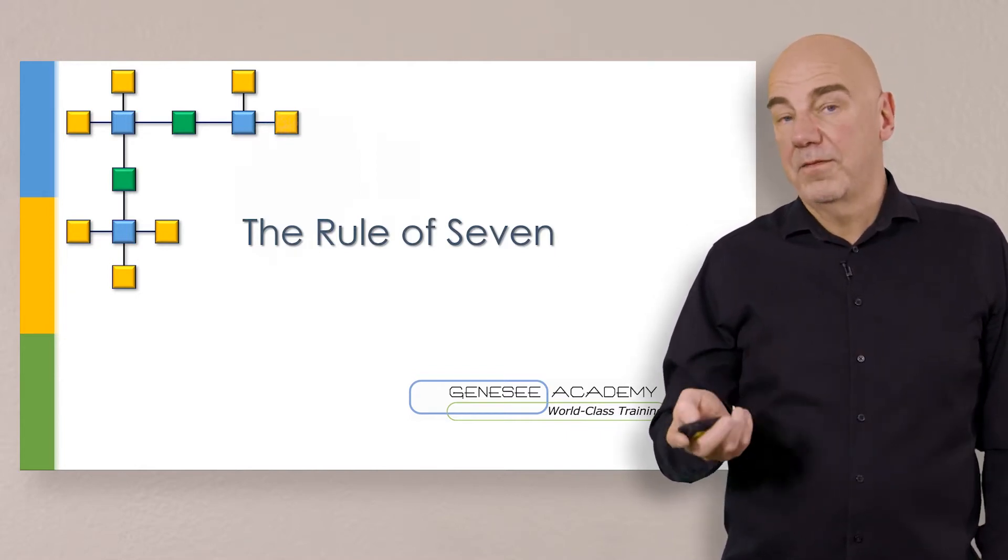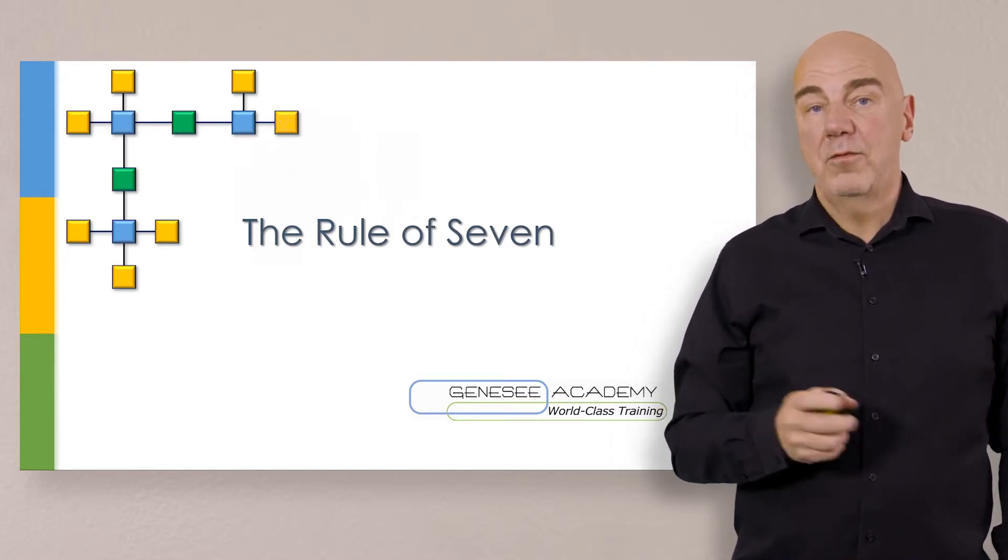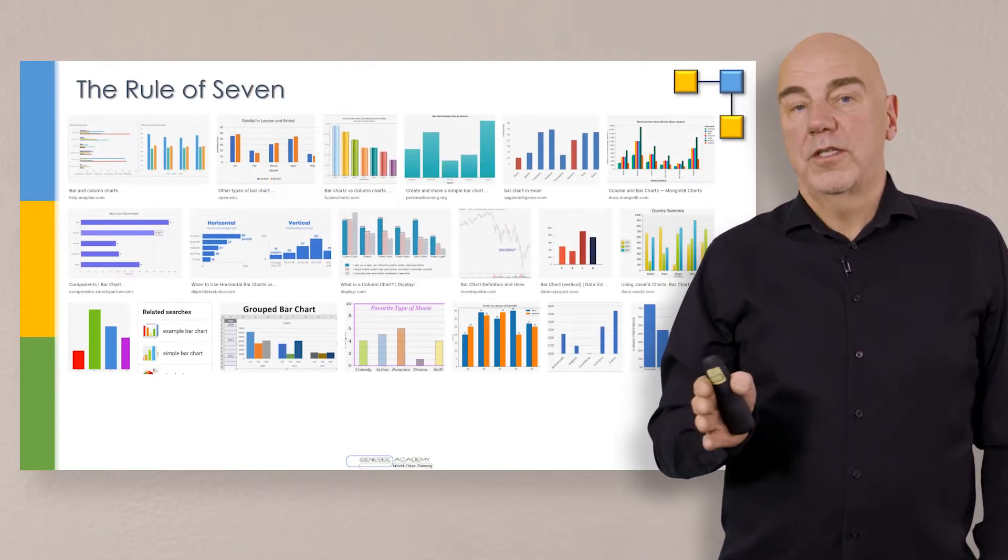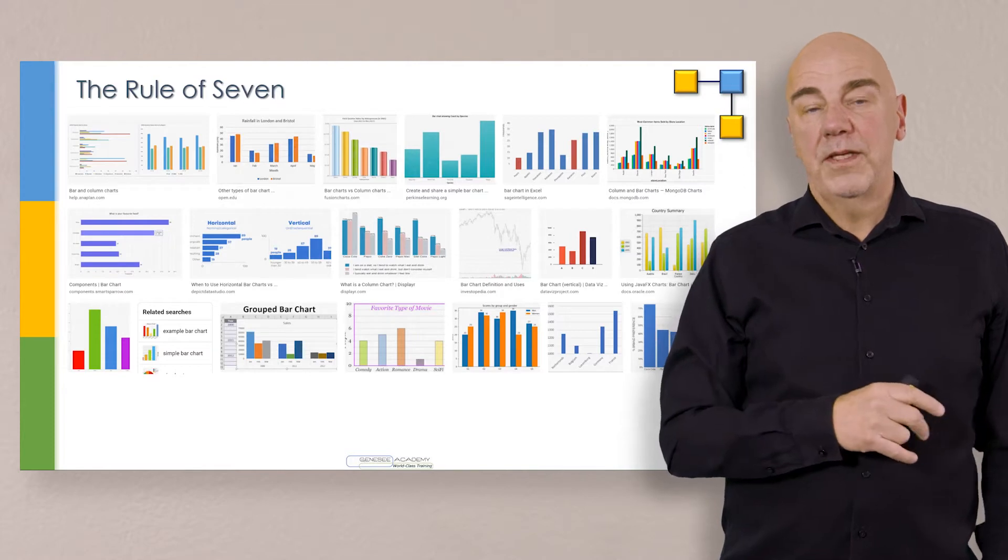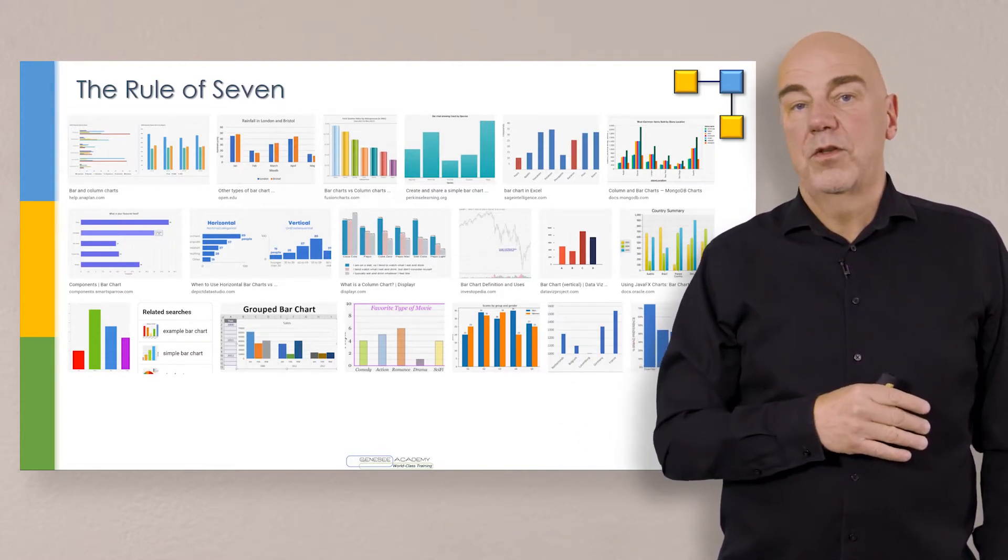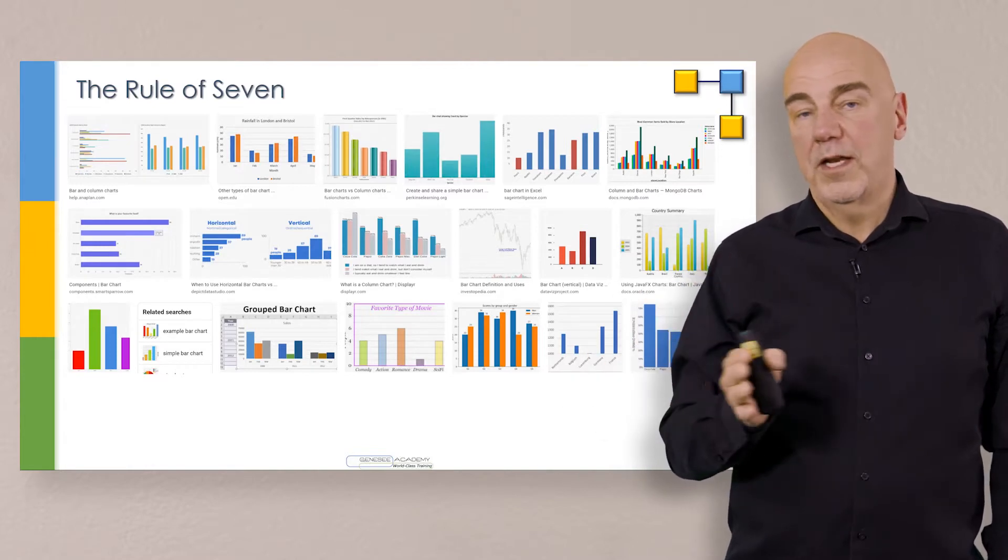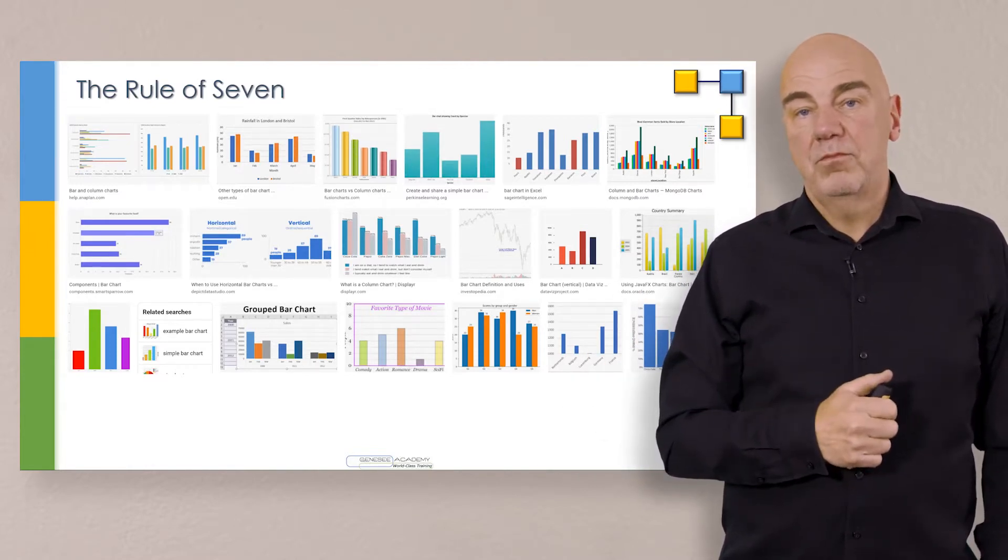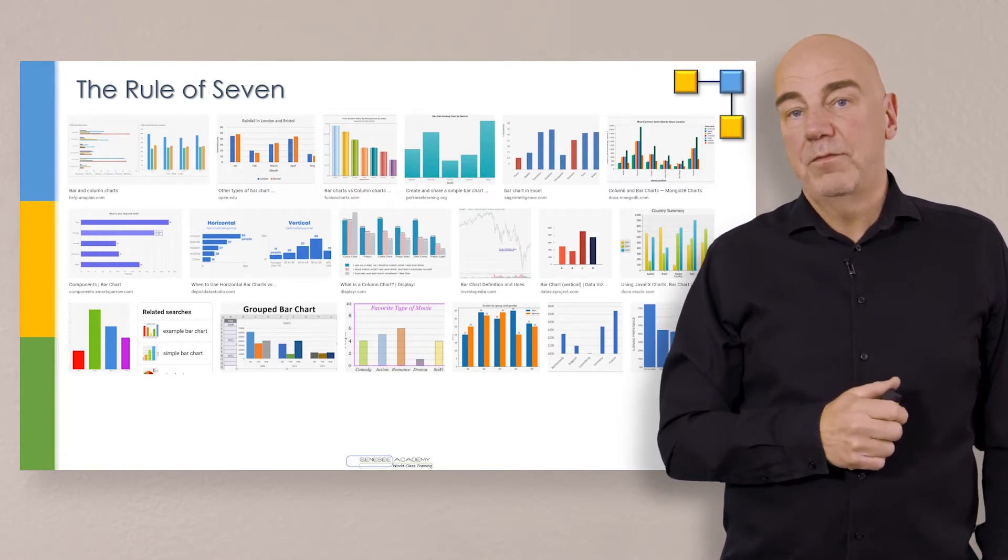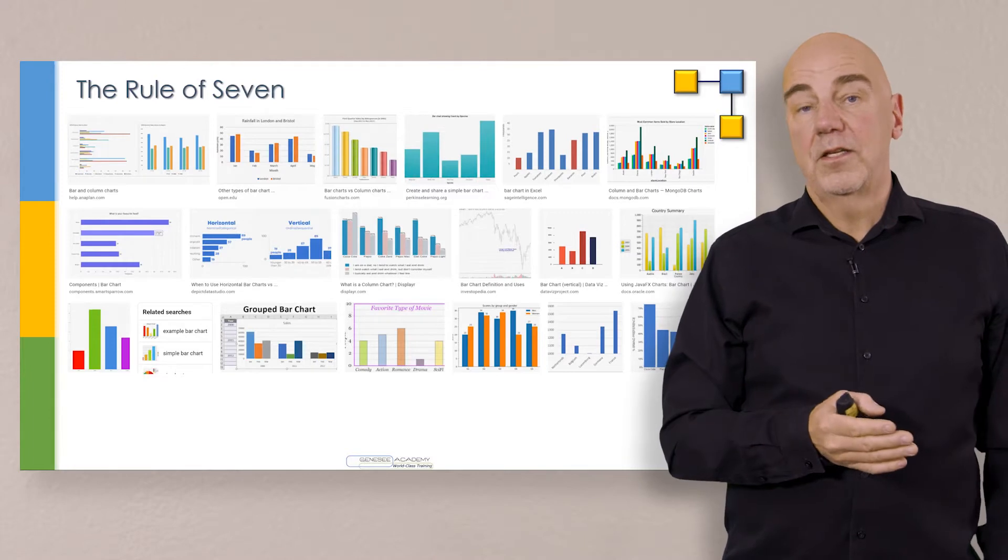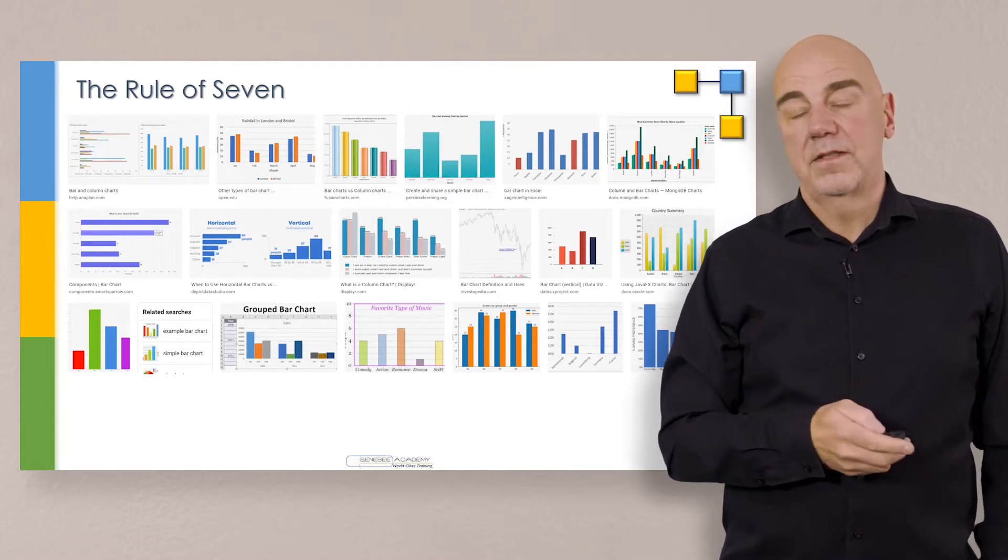So let's just kick off with the number seven in business, in organizations, and in life in general. We'll kick off with the first slide here which is a bunch of bar charts. You're going to notice something interesting about these bar charts, and they're just a random selection of them, whether they're vertical or horizontal comparing more than one thing. You'll notice that they're in the range of maybe three, four, five, six, seven different sets of data compared to each other.